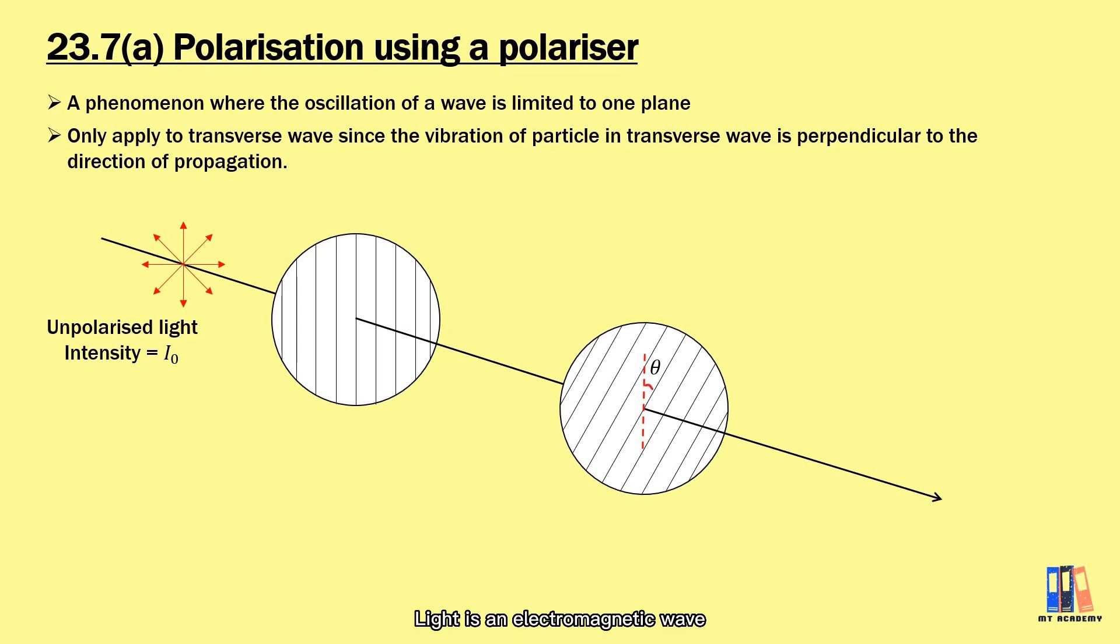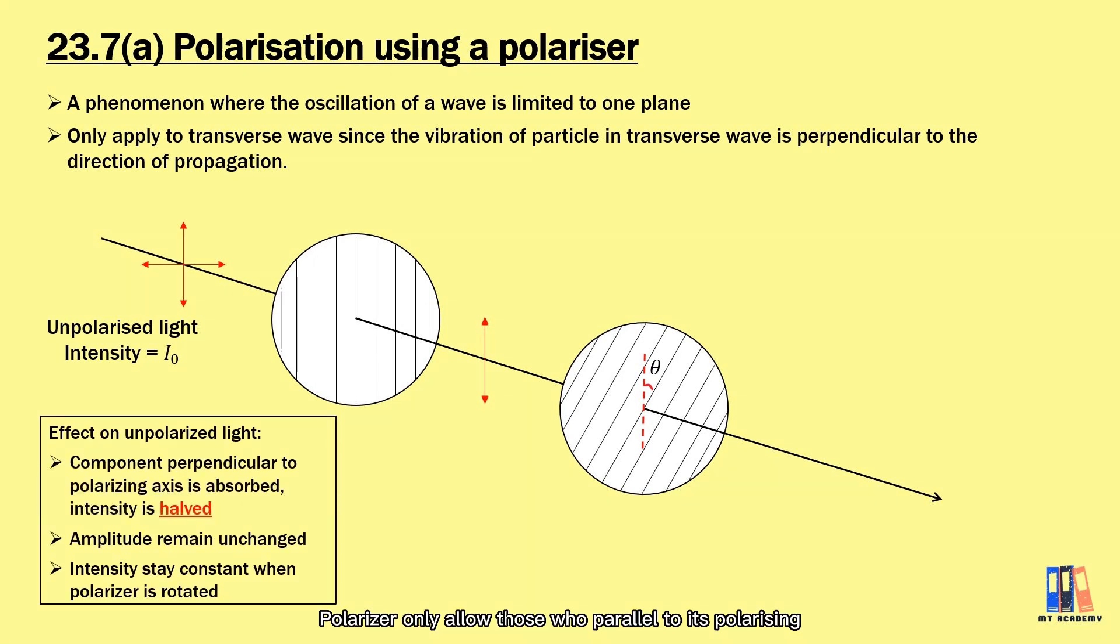Light is an electromagnetic wave which consists of electric and magnetic fields vibrating in two perpendicular axes. They could be in any direction. When you apply the polarizer, you can resolve the light wave into two components: one is parallel and another is perpendicular to the polarizing axis of the polarizer. What happens is the perpendicular component will be absorbed by the polarizer, or you can also say it is blocked by the polarizer.